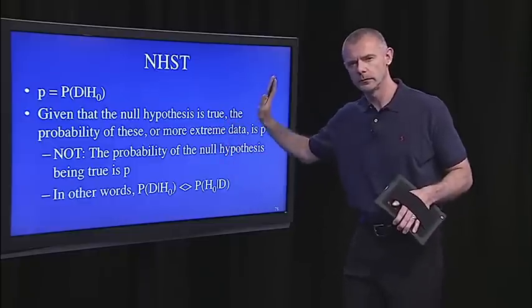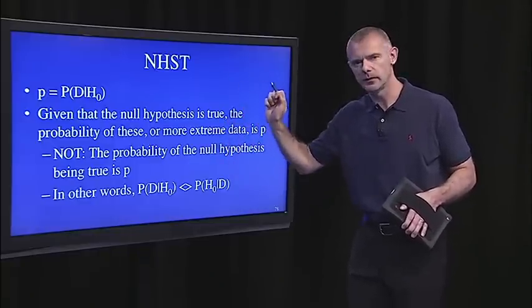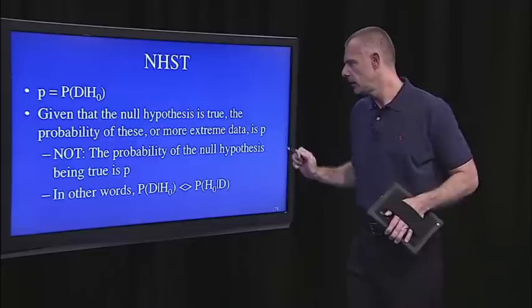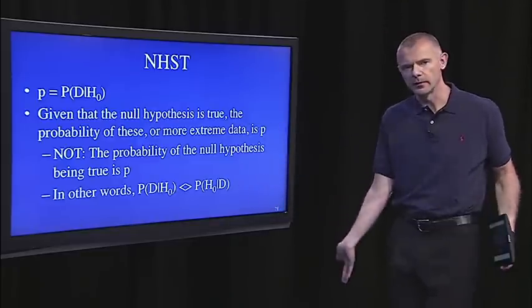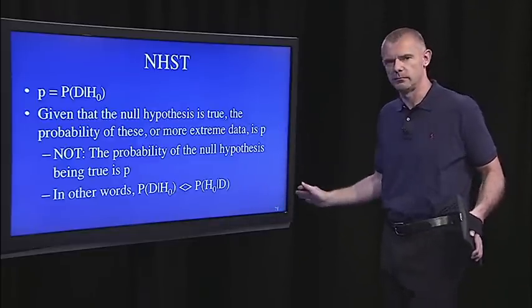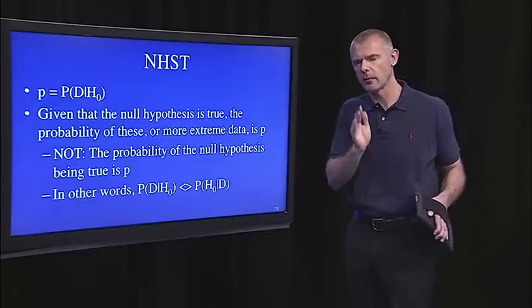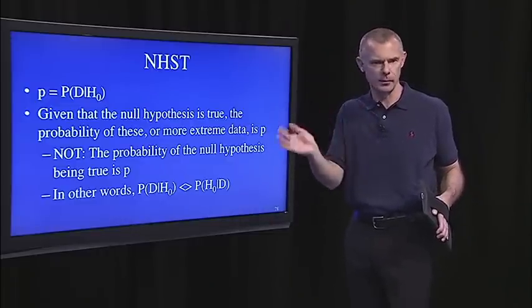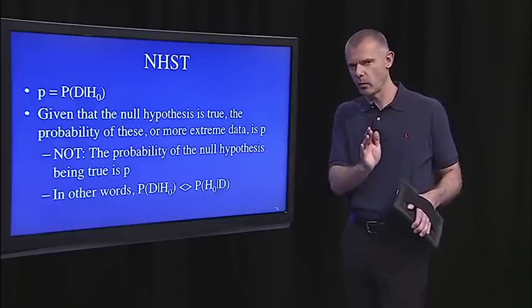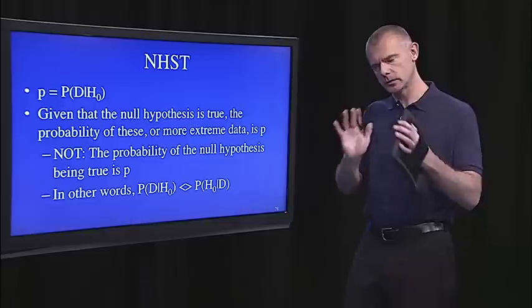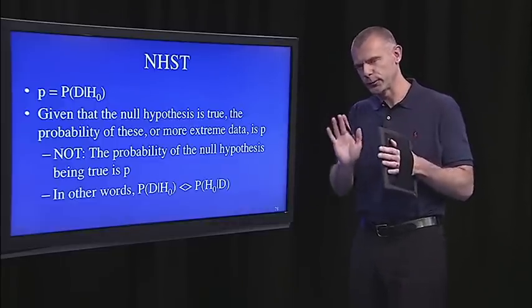It's important, though, to remember that that's what the p-value is. That it's the probability of the data given the null. It's not the probability of the null hypothesis being true. It's not the probability about a hypothesis, it's the probability about an observation given a hypothesis. That's a subtle difference and a really important one, and one that statisticians argue over for day in and day out and for years.